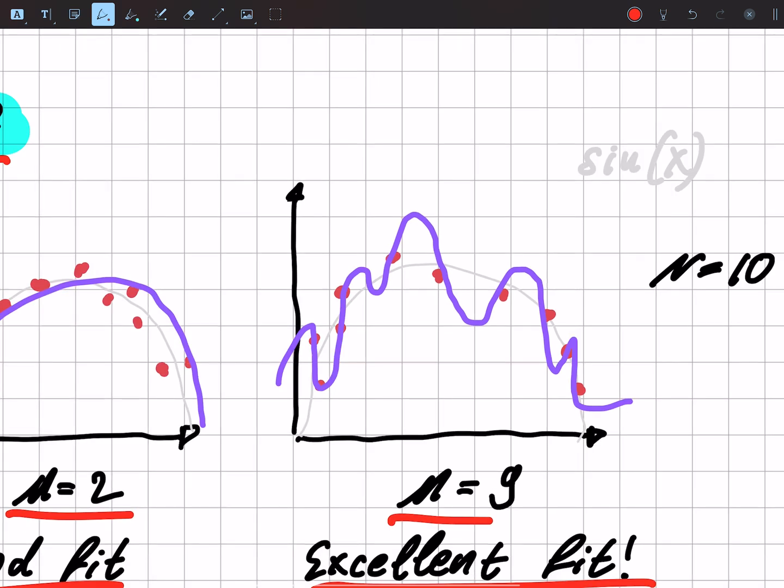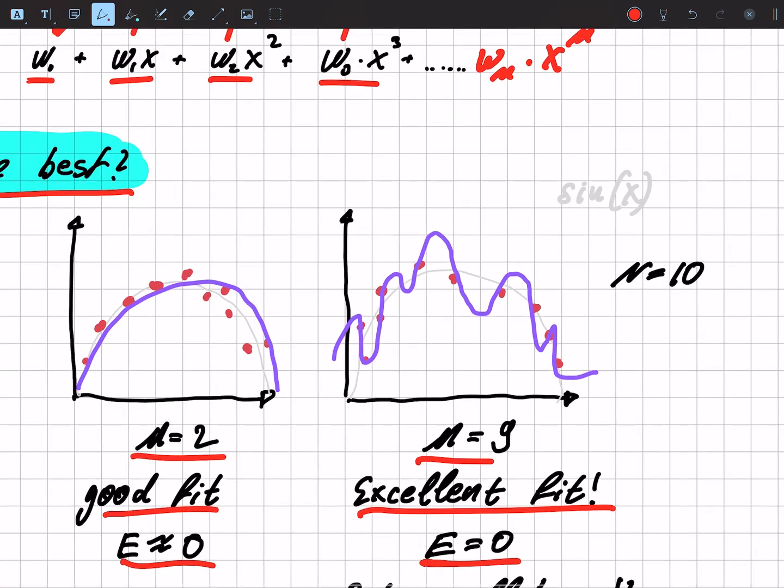Each data point is learned by heart by our graph basically. But then it's true that we have an error that is zero, but is it actually what we want?